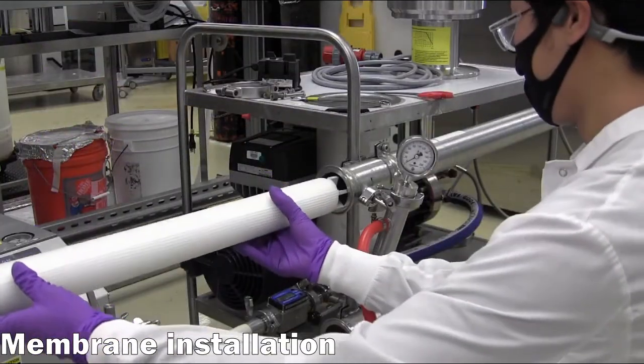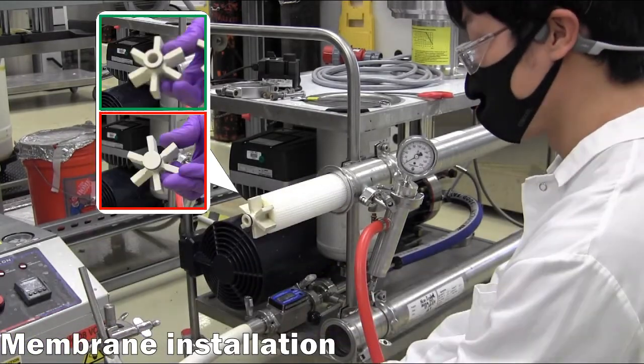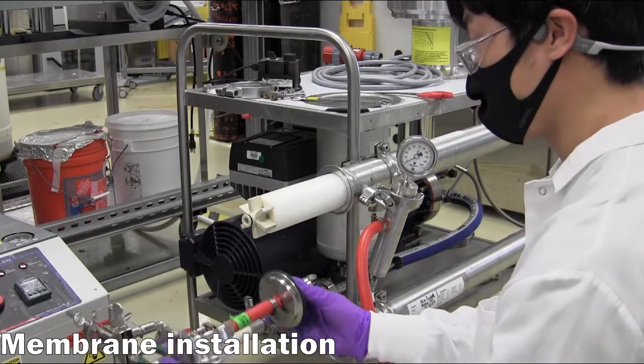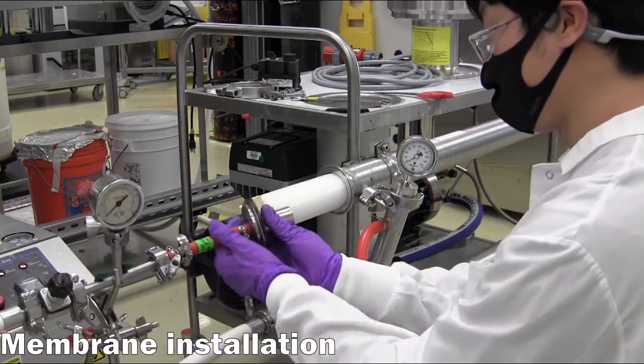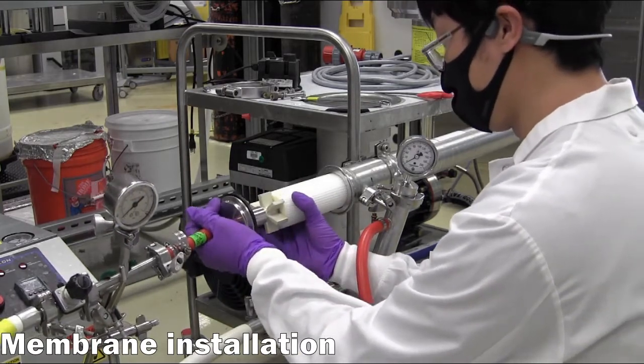The membrane is then inserted into the housing, with the blank ATD towards the inlet side, and the connecting ATD towards the outlet side close to the technician. Before fully inserting, the ATD is first connected to the end cap, facilitating the connection to the permeate outlet line.